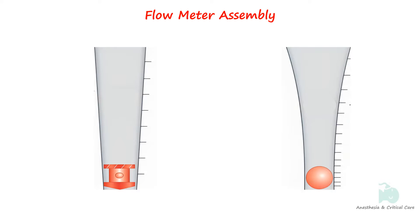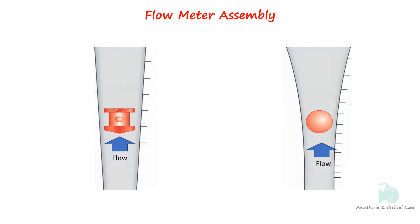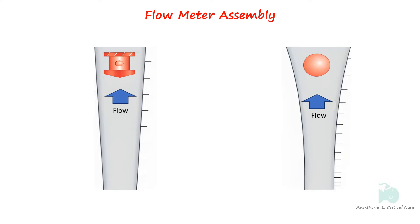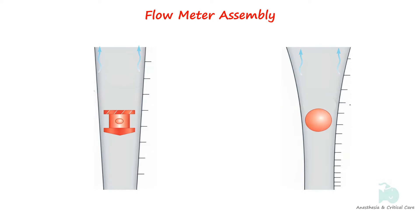As the valve is opened, gas flows into the tube and the float rises within the tube until the gravitational force acting on the float is balanced by the force of gas entering the bottom of the tube. The more gas that is allowed to enter, the higher the float rises. Gas passing between the float and the walls exits from the top and is delivered to the vaporizer or fresh gas outlet. Bobbin flow meters should be read from the top of the bobbin, while ball float types should be read from the middle of the ball.